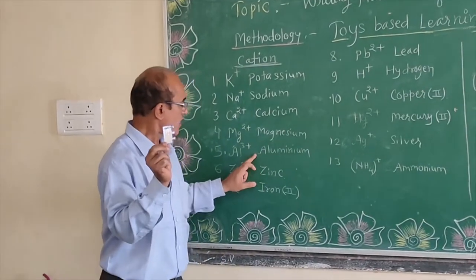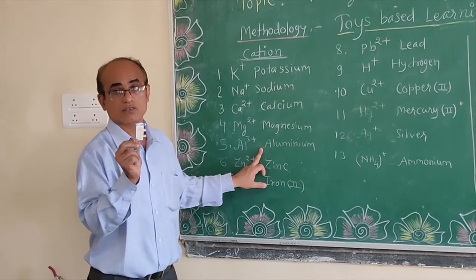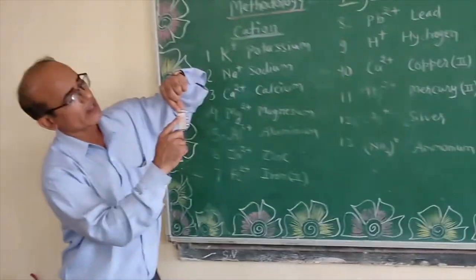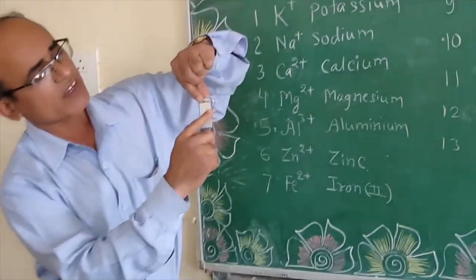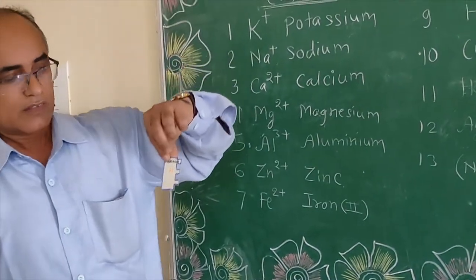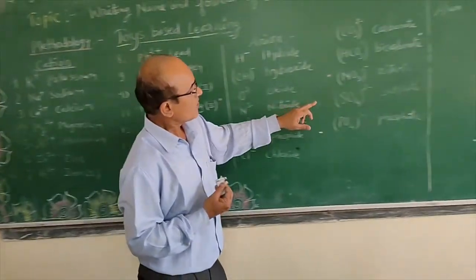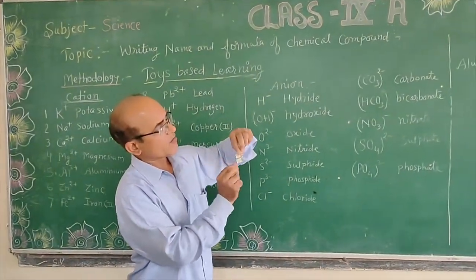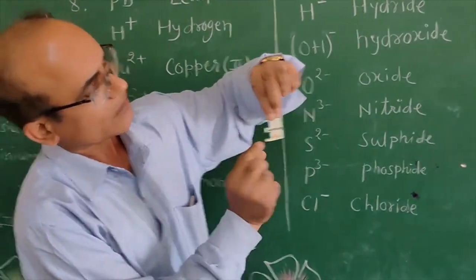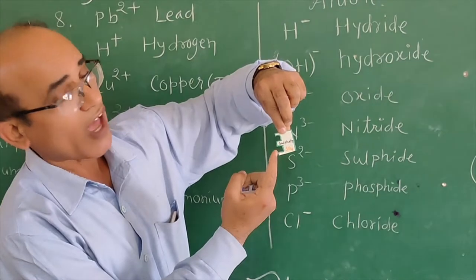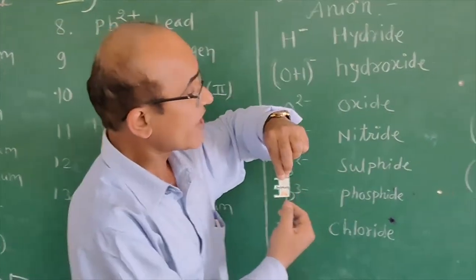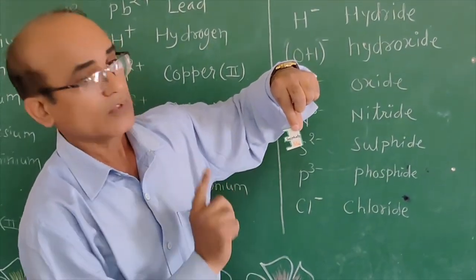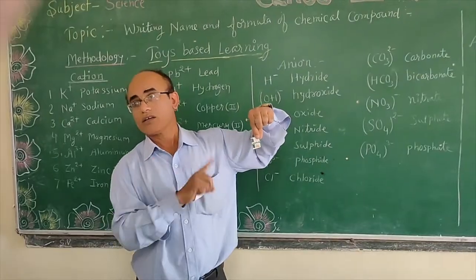Now, aluminum ion has three positive charge. That's why aluminum on the paper has three heads. Sulfate ion has two negative. So this socket type arrangement I made on the paper. And this side, two sockets, because two negatives are present on the sulfate ion. That is why these two sockets are given to the sulfate ion.